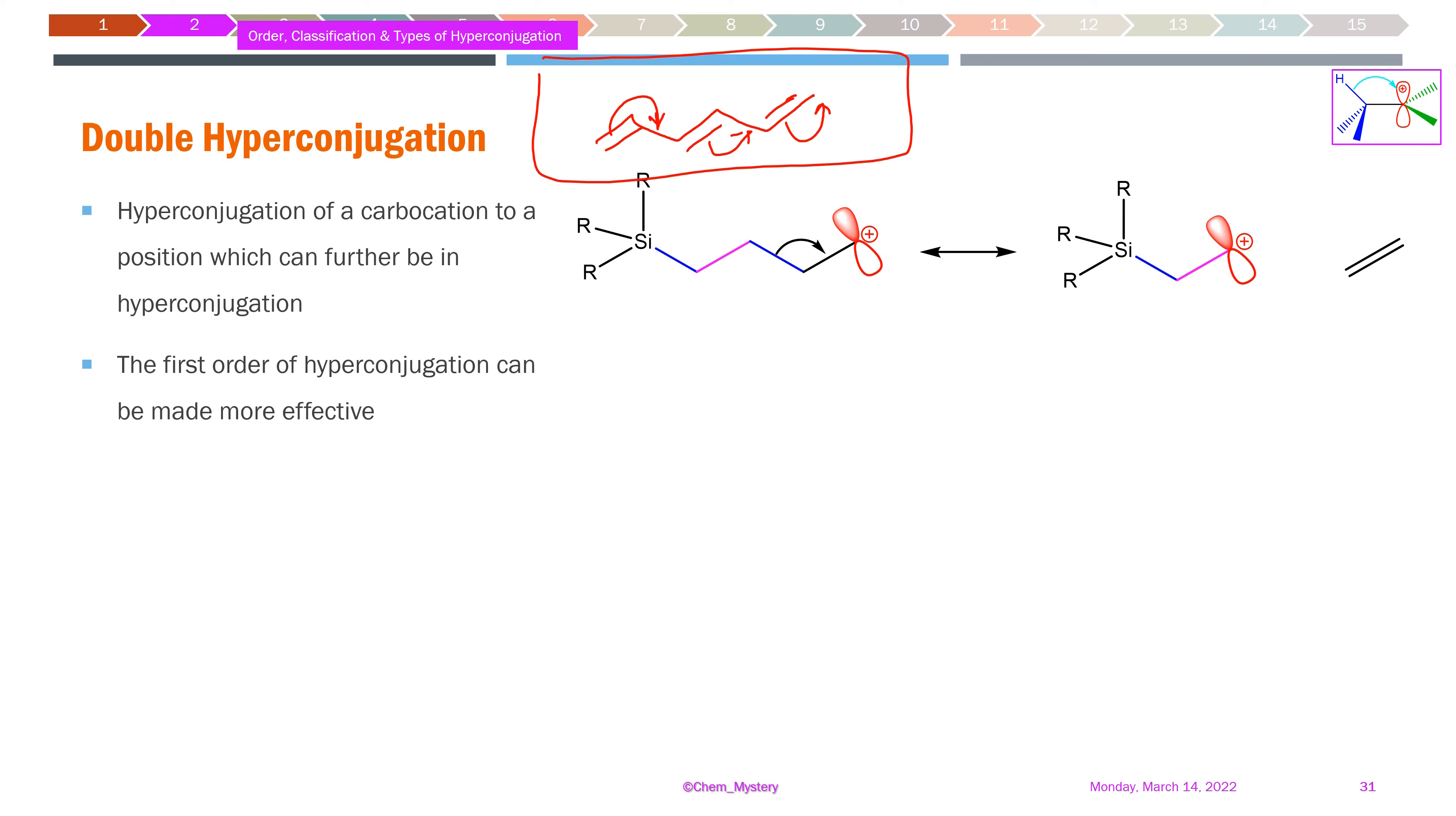The carbon-carbon sigma bond has much weaker electron donor ability than carbon-hydrogen due to differences in polarity. As discussed previously, the carbon-silicon bond has much greater polarity than carbon-hydrogen, making it a much better electron donor.